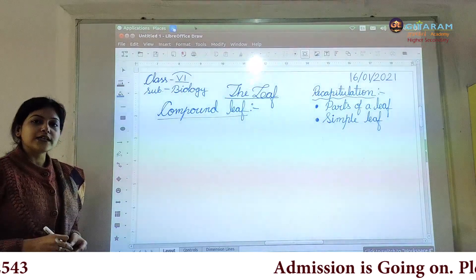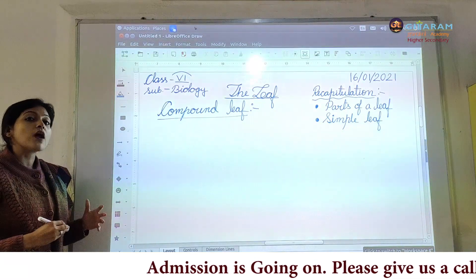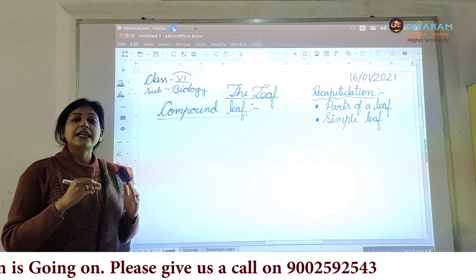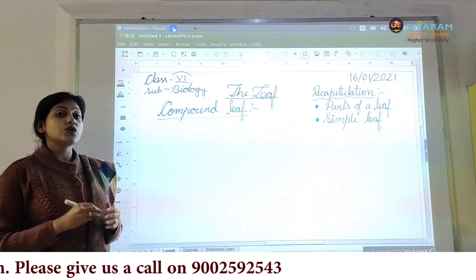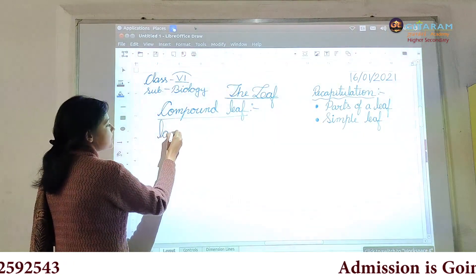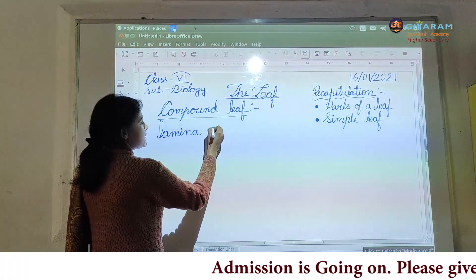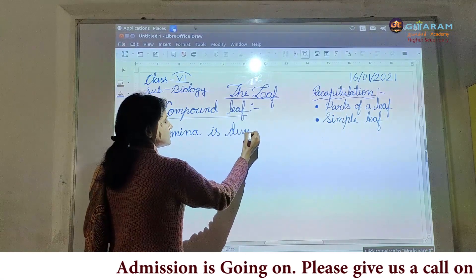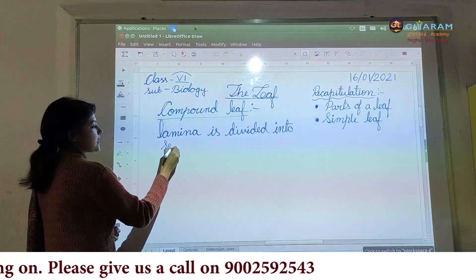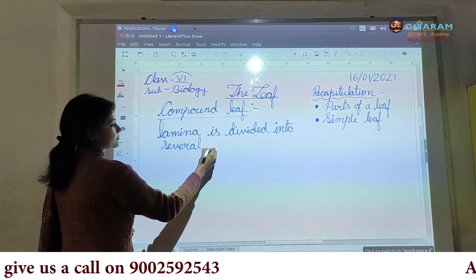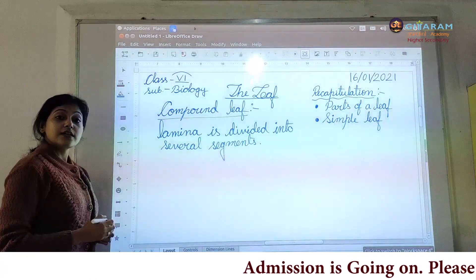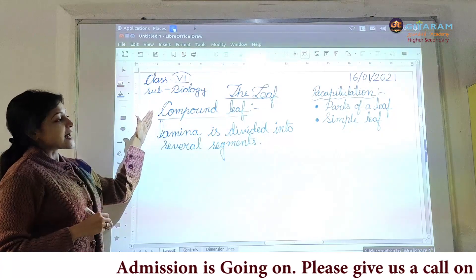What is the actual definition of compound leaf, or when will a leaf be called compound? A leaf is said to be compound when its lamina or leaf plate is divided into several segments. So the definition I am writing here: lamina is divided into several segments. That kind of leaf will be called a compound leaf.